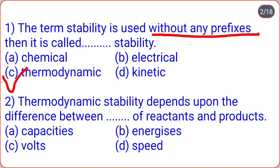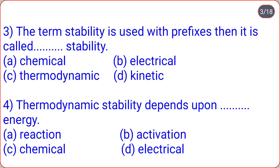Thermodynamic stability depends upon the difference between energies of reactants and products — correct option B, energies. When the term stability is used with prefixes, it is called kinetic stability. So: without prefixes = thermodynamic stability; with prefixes = kinetic stability.